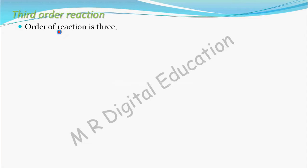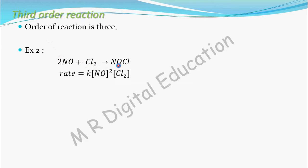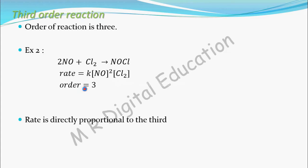Now let's see more about third-order reactions. For a third-order reaction, the order of reaction is 3. An example is 2NO + Cl₂ → 2NOCl. For this reaction, the rate can be written as: rate = K × [NO]² × [Cl₂]¹. Since the powers are 2 and 1, and 2 + 1 = 3, the order equals 3.